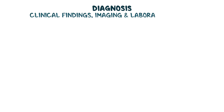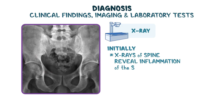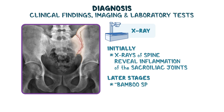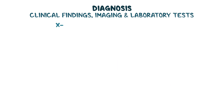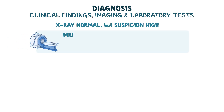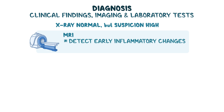Diagnosis of ankylosing spondylitis is based on a combination of clinical findings and imaging and laboratory tests. Initially, x-rays of the spine may reveal inflammation of the sacroiliac joints. In later stages, the classic bamboo spine appearance may be seen due to spinal fusion. In cases where x-ray findings are normal but clinical suspicion for AS is still high, an MRI may be performed, as MRIs can detect early inflammatory changes in the sacroiliac joints before they become visible on x-ray.